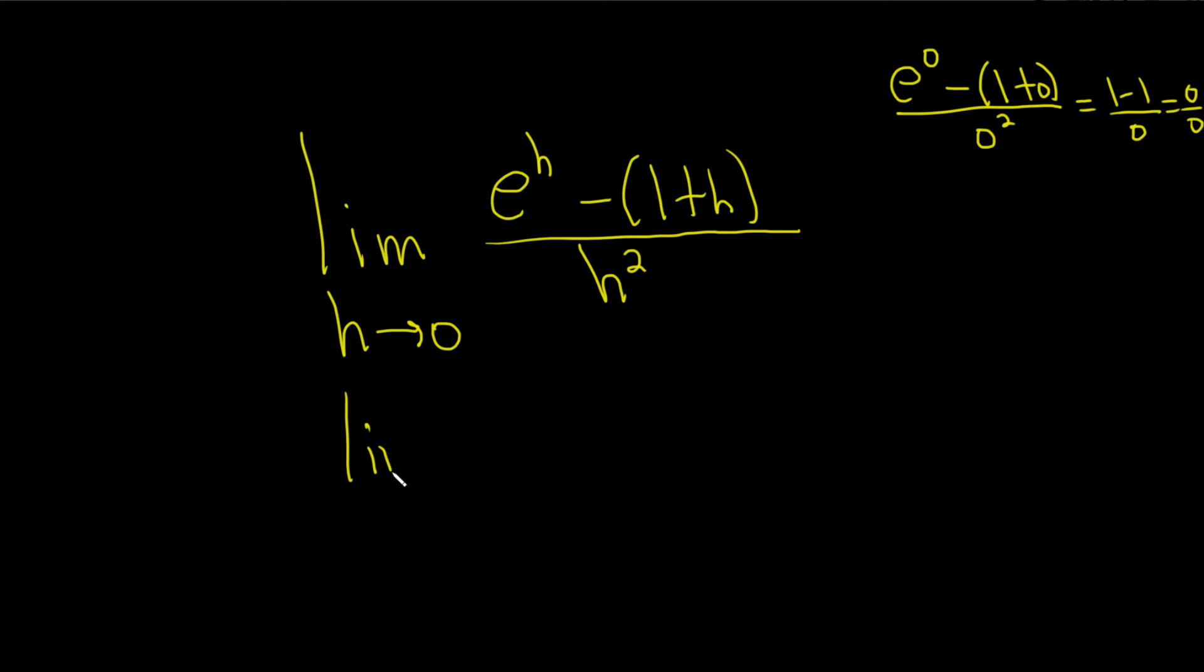This is still the limit as h approaches 0, and let's differentiate the numerator. The derivative of e to the h is e to the h. The derivative of 1 is 0, and the derivative of h is 1. On the bottom we differentiate using the power rule, bring down the 2, so we get 2h.